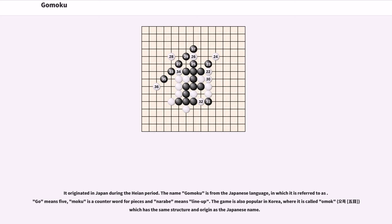It originated in Japan during the Heian period. The name Gomoku is from the Japanese language. Go means five, Moku is a counter word for pieces, and Nere means line up. The game is also popular in Korea, where it is called Omok, which has the same structure and origin as the Japanese name.